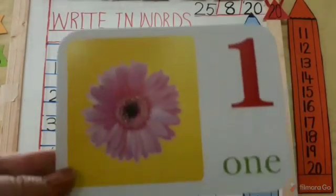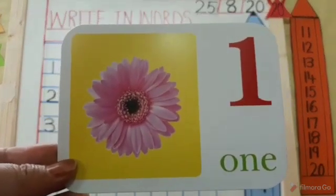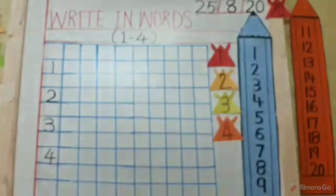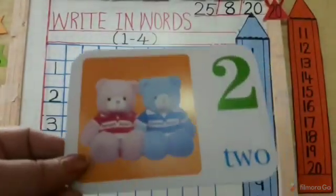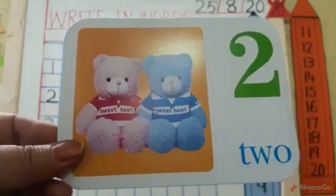What is this children? How many flowers? One flower. O-N-E. One. Now what is this? Two. T-W-O. How many teddy? Two teddy bears.